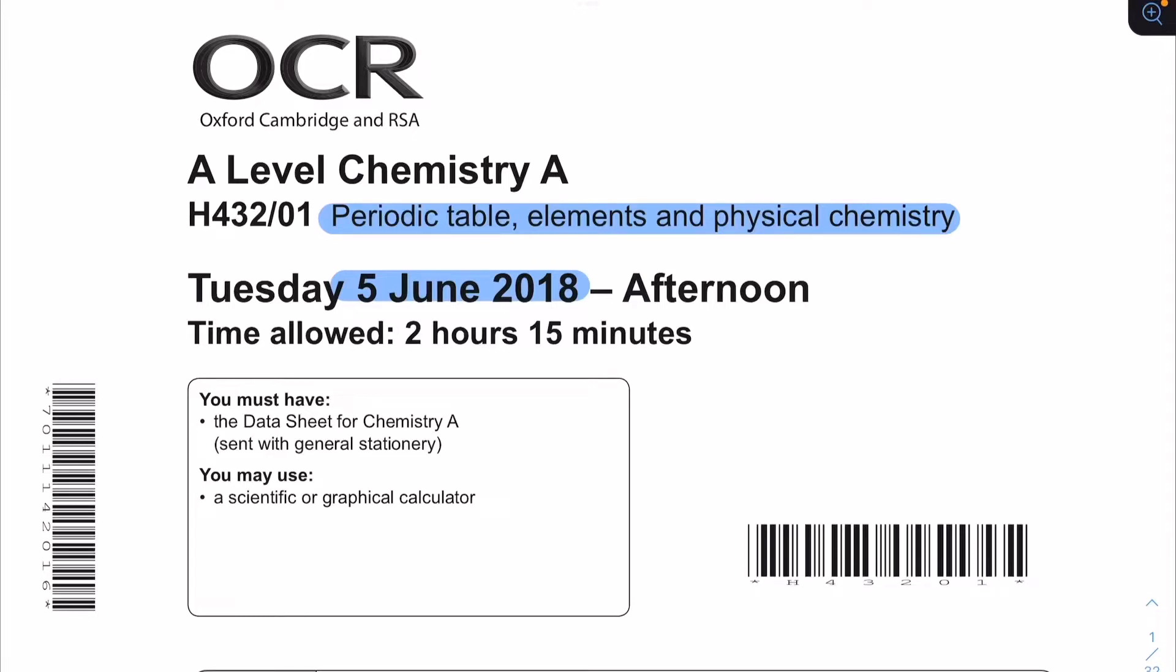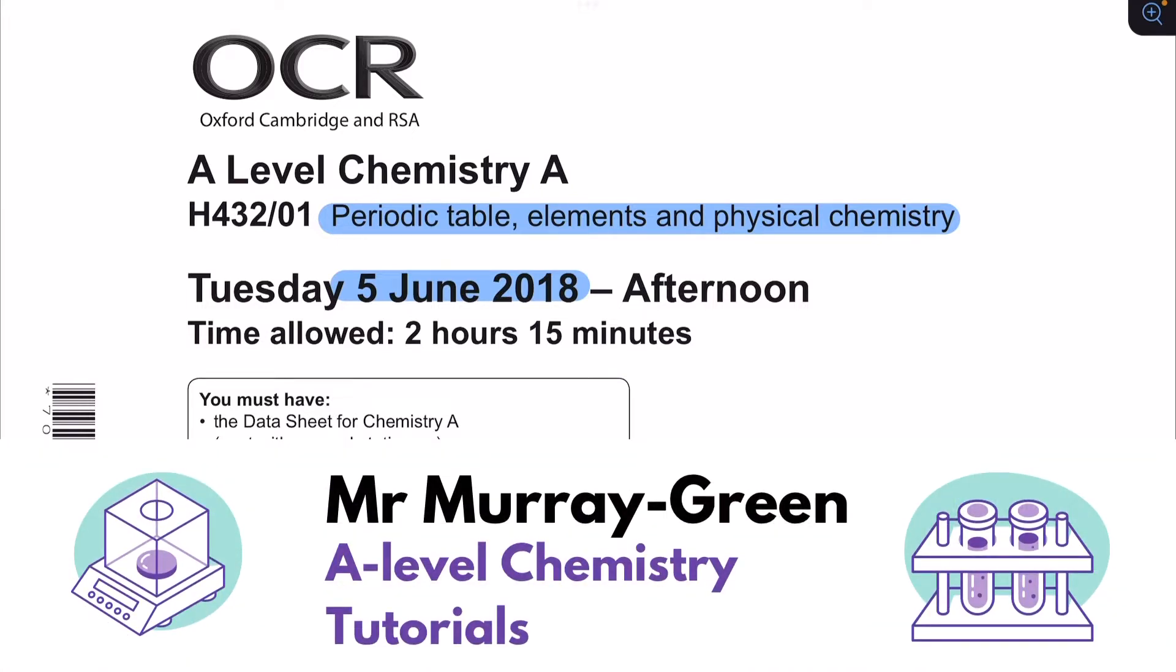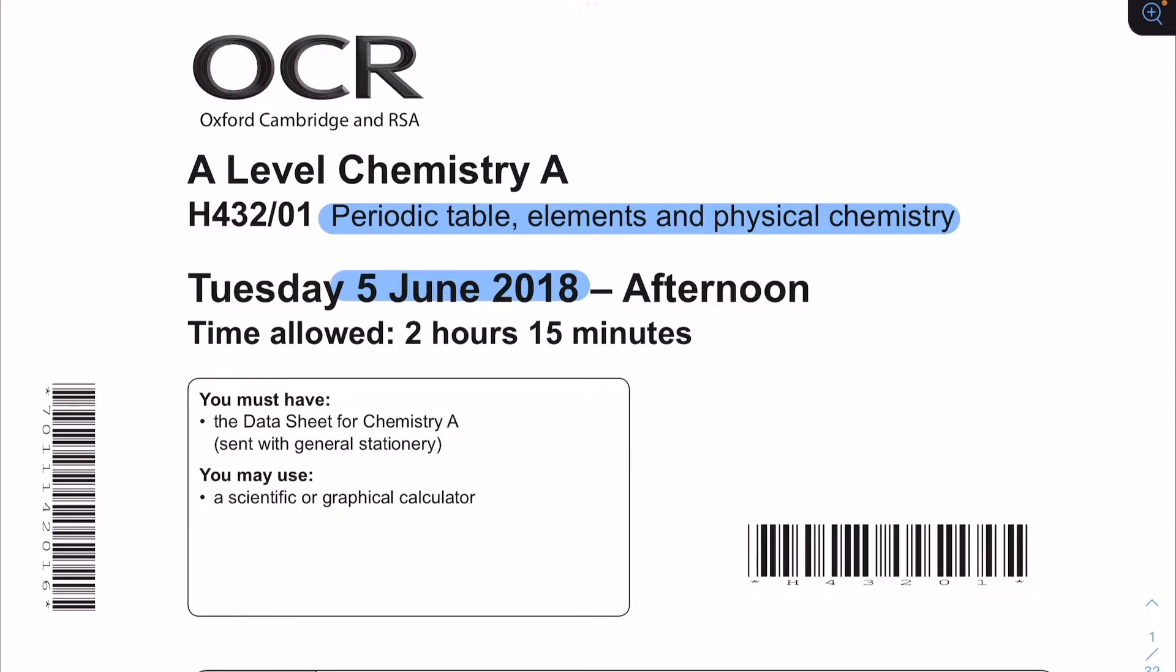The Periodic Table, Elements and Physical Chemistry exam on the OCR specification for A-level chemistry has multiple choice questions. The first 15 questions in the paper are multiple choice based on modules 2, 3, and 5. The mark scheme contains the correct answers but provides no explanation. In this video I'm going to take you through my answers to the June 2018 Periodic Table, Elements and Physical Chemistry multiple choice questions so you can understand and interpret the mark scheme more efficiently.